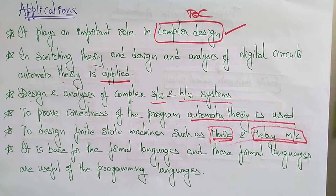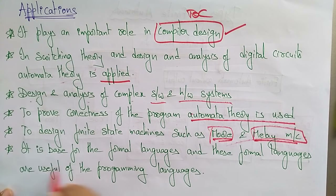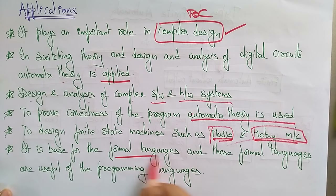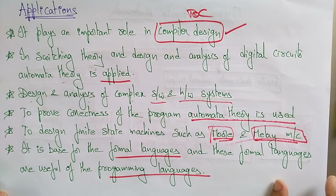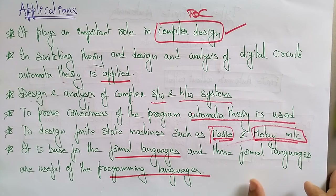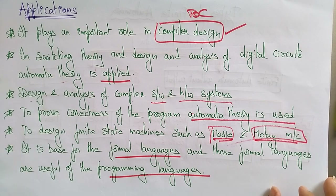The theory of computation is also helpful in designing finite state machines such as Moore and Mealy machines. It also forms the basis for formal languages, and these formal languages are useful for programming languages. So for all programming languages, the base is automata theory.